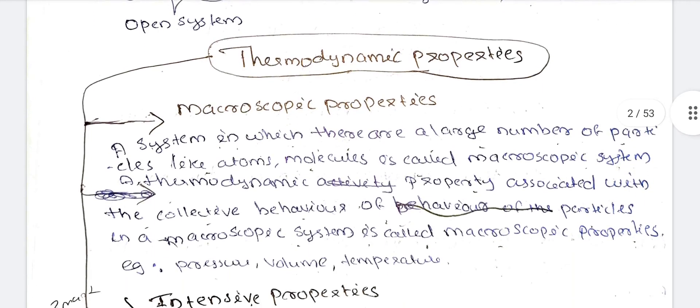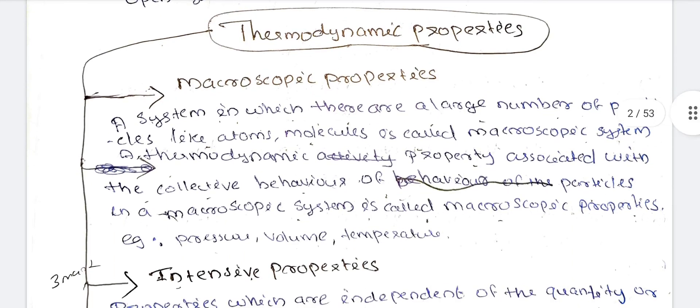What are thermodynamic properties? A system which has a large number of particles like atoms and molecules is called a macroscopic system. A thermodynamic property associated with the collective behavior of particles in a macroscopic system is called a macroscopic property. Examples of macroscopic properties include pressure, volume, and temperature.